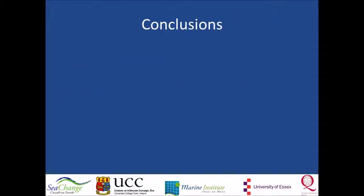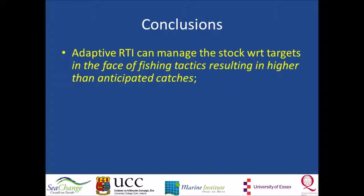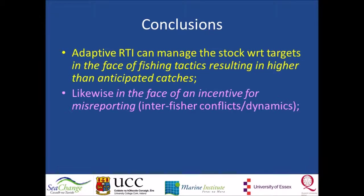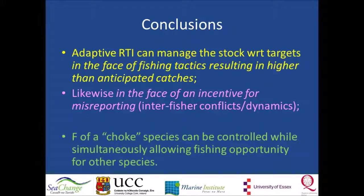The conclusions of this study are that adaptive RTI can manage the stock with regards to targets in the face of fishing tactics resulting in higher than anticipated catches, and likewise in the face of an incentive for misreporting — though note that inter-fisher conflicts may arise. The final conclusion is that the harvest rate of a choke species can be controlled while simultaneously allowing fishing opportunity for other species.